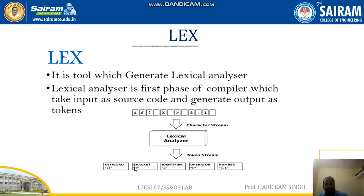Then bracket — bracket is another token. Then x is an identifier. The greater-than symbol is called an operator. And 3.1 is a number. So, in this character stream, whatever keywords, brackets, identifiers, numbers, and operators are present, the lexical analyzer will generate the tokens. The lex is a tool which generates the lexical analyzer, and the lexical analyzer will generate the tokens.